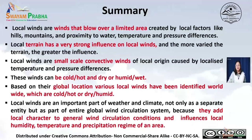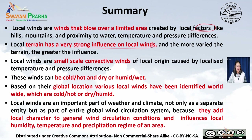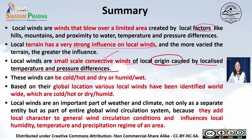Summarizing the video: local winds are winds that blow over a limited area created by local factors like hills, mountains, proximity to water, and local differences in air pressure. Local terrain has a very strong influence on local winds — the more varied the terrain, the greater the influence. Local winds are small-scale convective wind systems of local origin caused by localized temperature and pressure differences. Based on these conditions, local winds can be cold or hot, dry or wet.